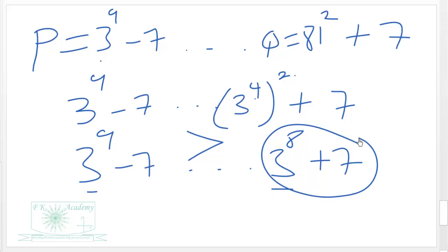Now when we subtract 7 from 3 exponent 9, the value will still be far greater than when we add 7 to 3 exponent 8. Therefore, P is the greater value. So we pick this up. Thank you.